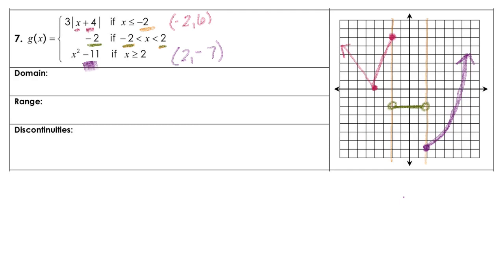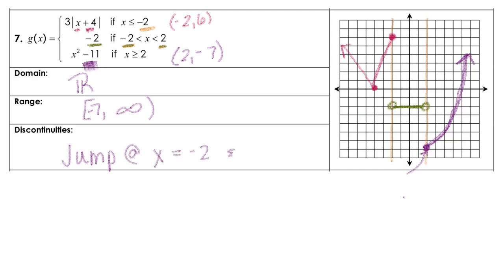Now let's talk about domain and range. The domain looks like all real numbers. The range — the lowest point was down at negative 7 — so we're going to have from negative 7 to positive infinity. We have a couple of jump discontinuities: a jump at x equals negative 2 and x equals positive 2.